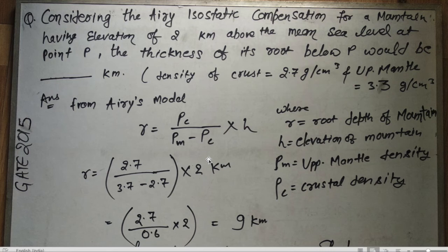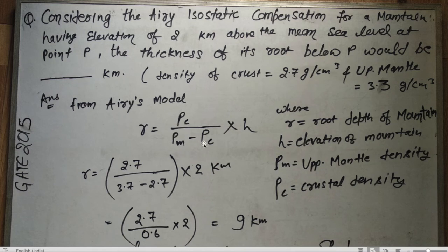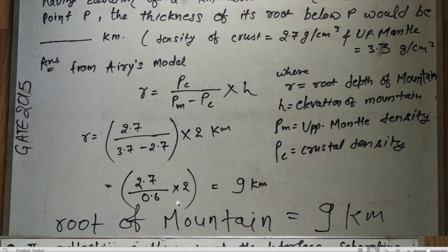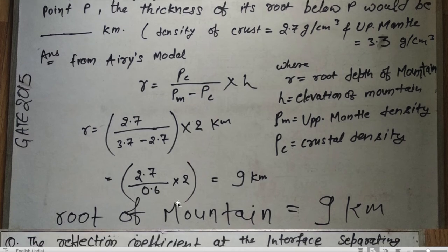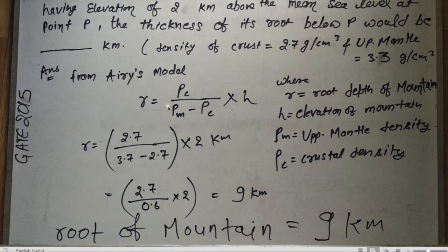From the Airy model, the root depth of the mountain equals (crustal density / (upper mantle density − crustal density)) × h, where h is the elevation. Substituting: 2.7 / (3.3 − 2.7) × 2 km = 2.7 / 0.6 × 2 = 9 km. So the root depth at point P is 9 kilometers.